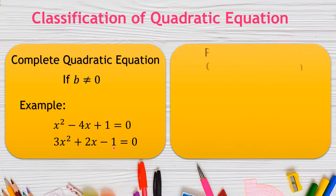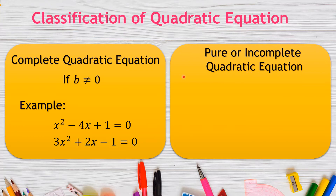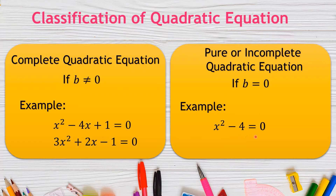Another classification is the pure or incomplete quadratic equation. What will happen if b becomes 0? If b is equal to 0, the linear term is omitted. For example, x² − 4 = 0 has x² as the quadratic term and −4 as the constant term. Another example is 3x² + 6 = 0, where 3x² is the quadratic term and 6 is the constant term.